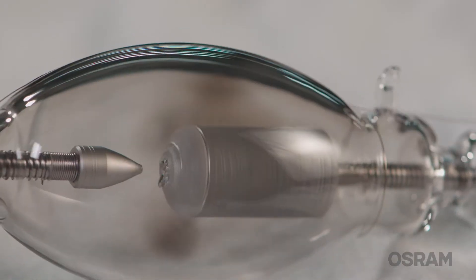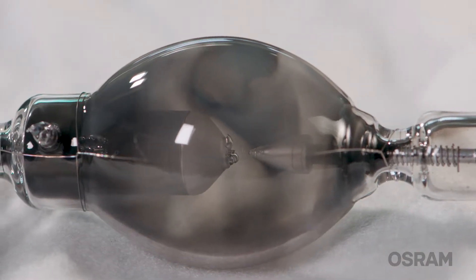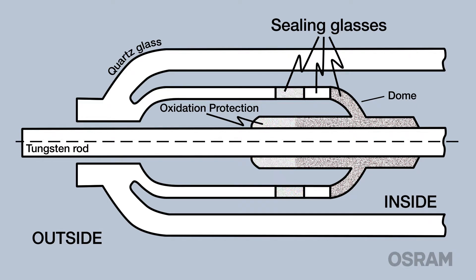Lamp darkening will start to occur at an accelerated rate and in severe cases the oxidation protection that seals the xenon gas inside the lamp can be burned away creating an air leak and ruining the lamp.